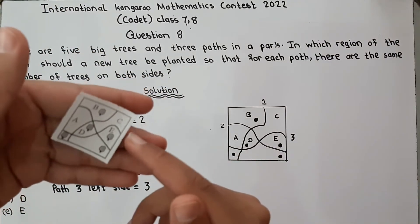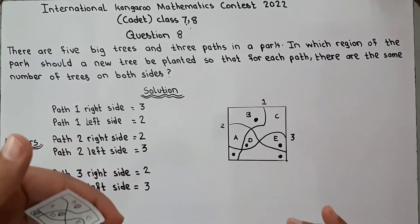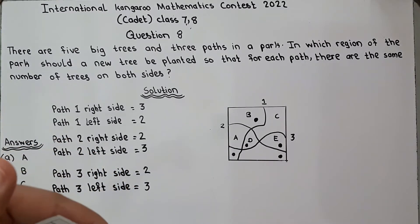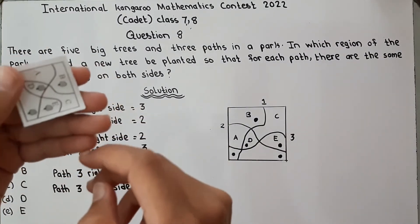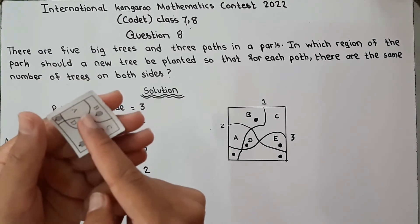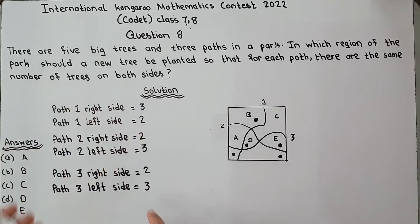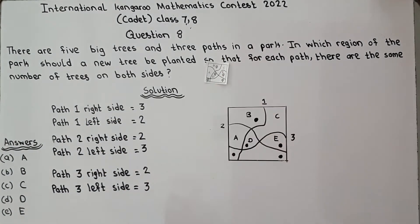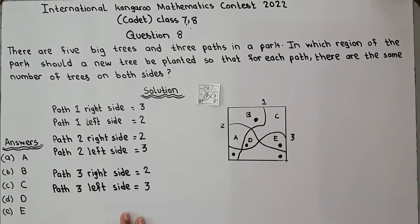Path 3 is this. On the right side of path 3 there are 1, 3, and 2 trees, and on the left there are 1, 2, 3 trees. So on path 3, the right side has 2 trees and the left side has 3 trees.